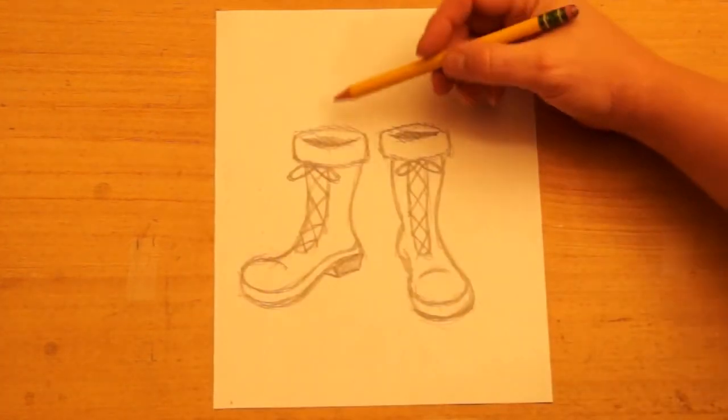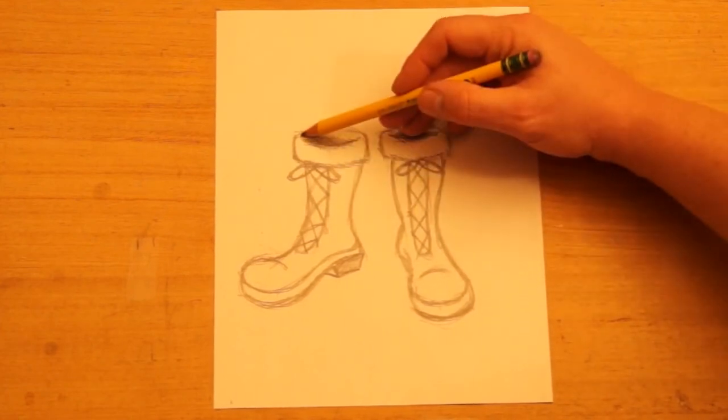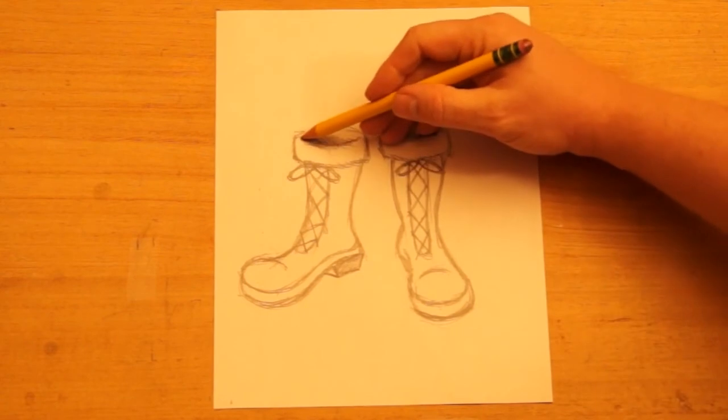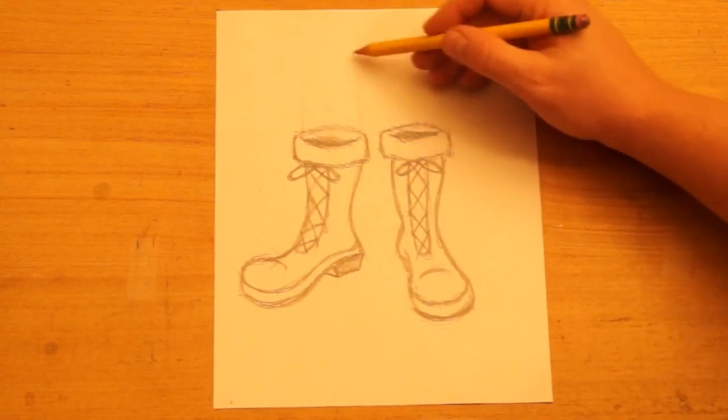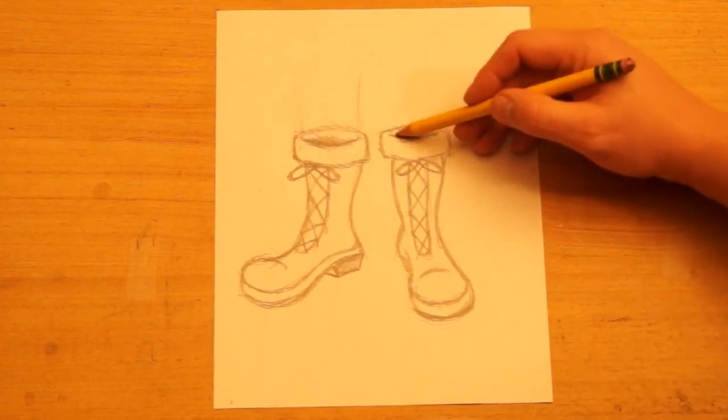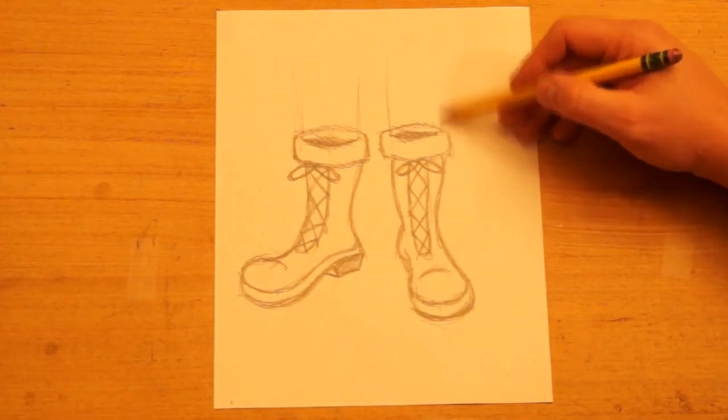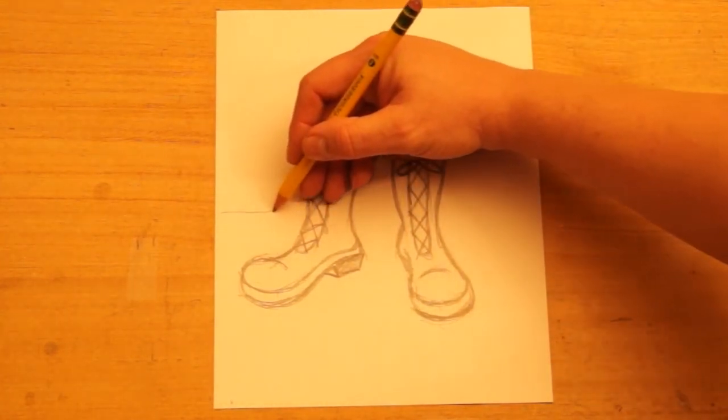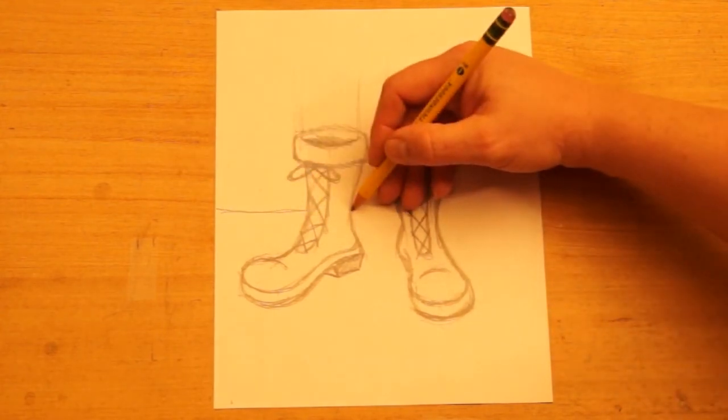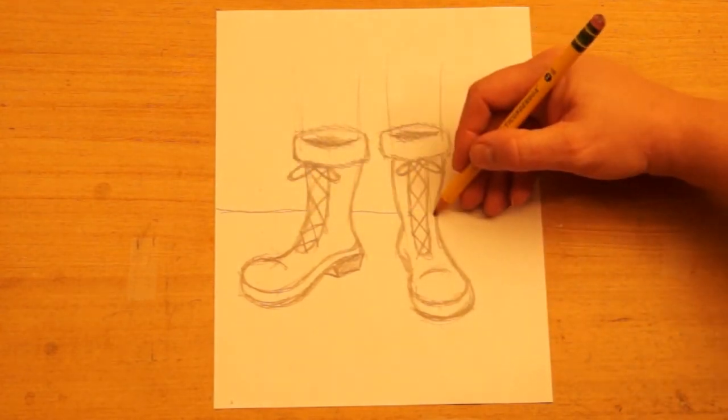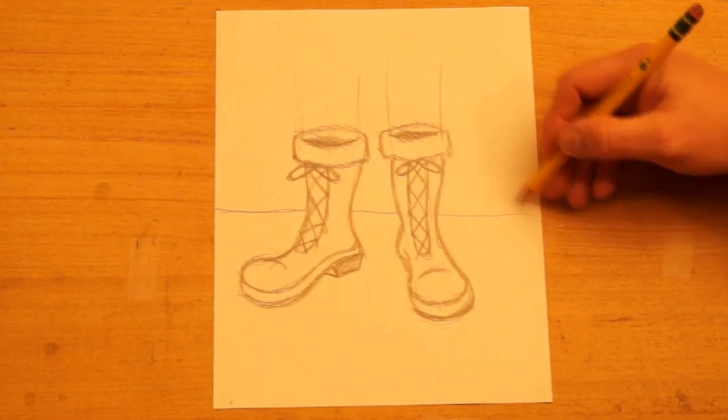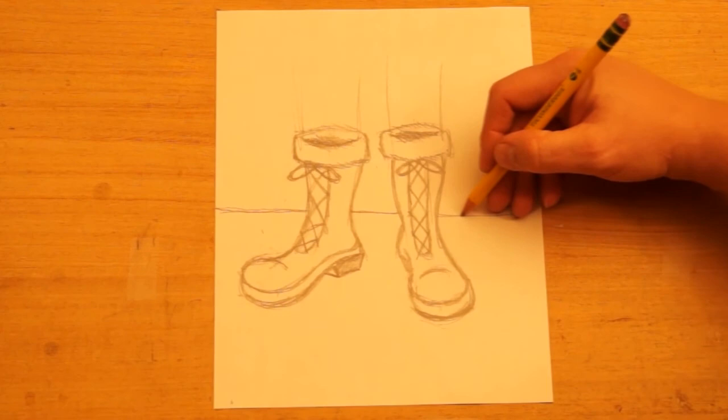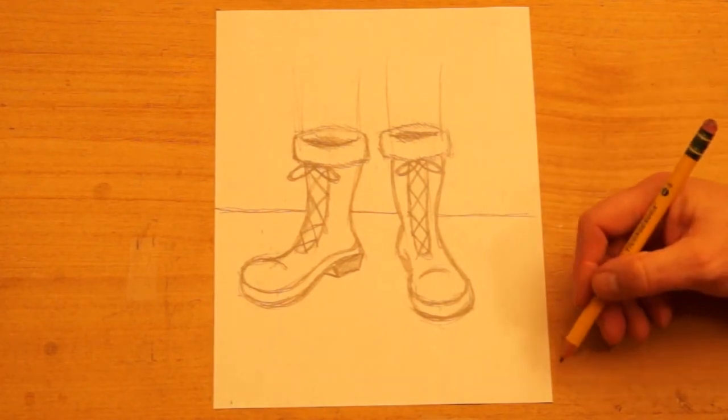Now, if you were going to make it look like a person was wearing these, you wouldn't see this backside back here. You would just make the lines go up from the inside for the legs. Let's draw a horizon line back here. If you're outside, this is where the sky and earth meet. If you're inside, this would be where the wall and floor meet.